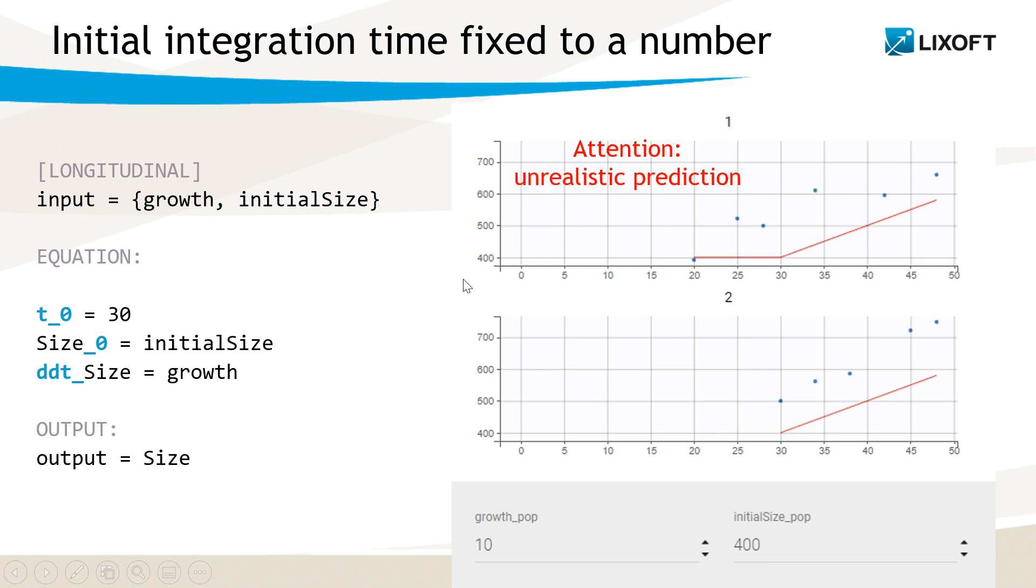the prediction before time 30 for ID 1 is the constant initial tumor size, 400, because the ODE is not solved backward. This solution before time 30 is unrealistic, so this situation where the initial integration time is higher than the time of the first record for some individual should be avoided.